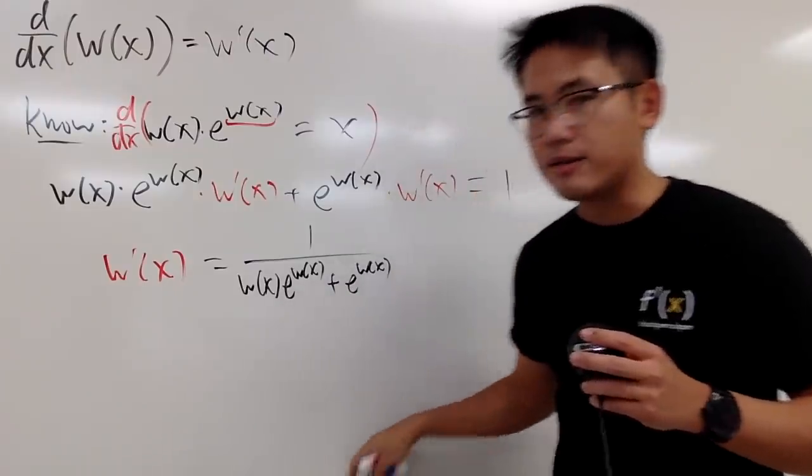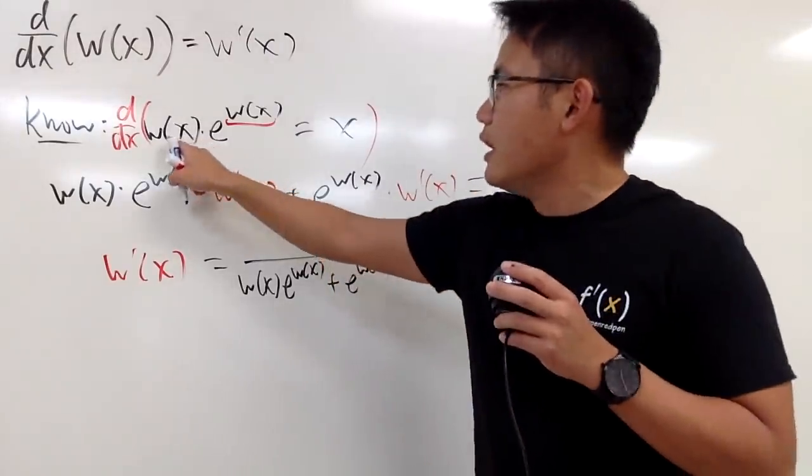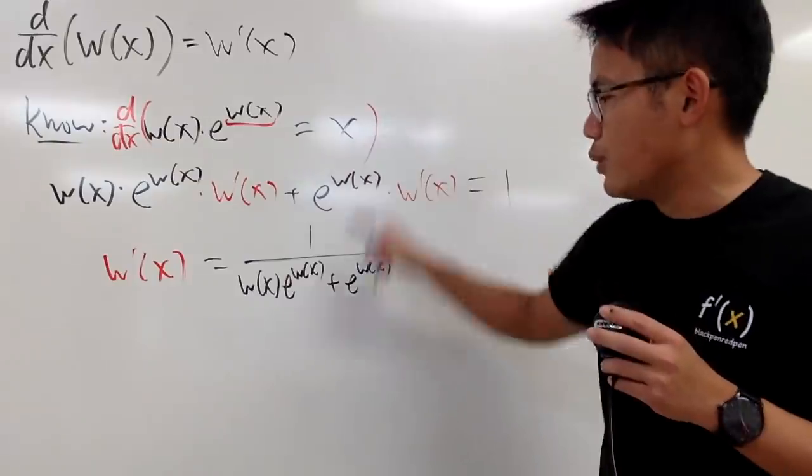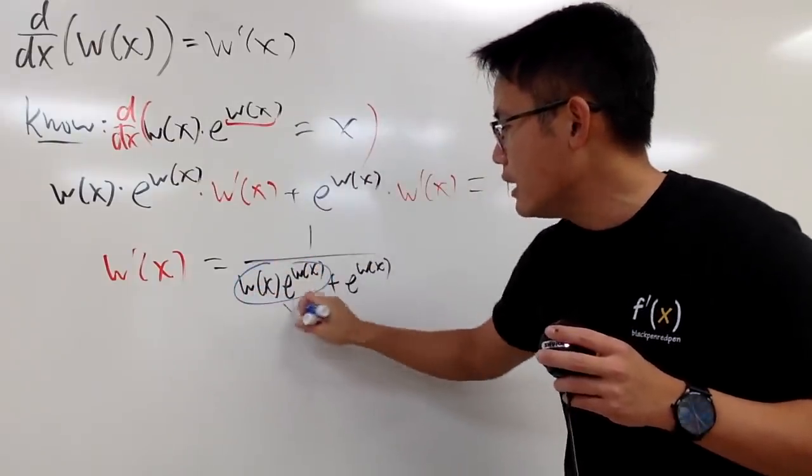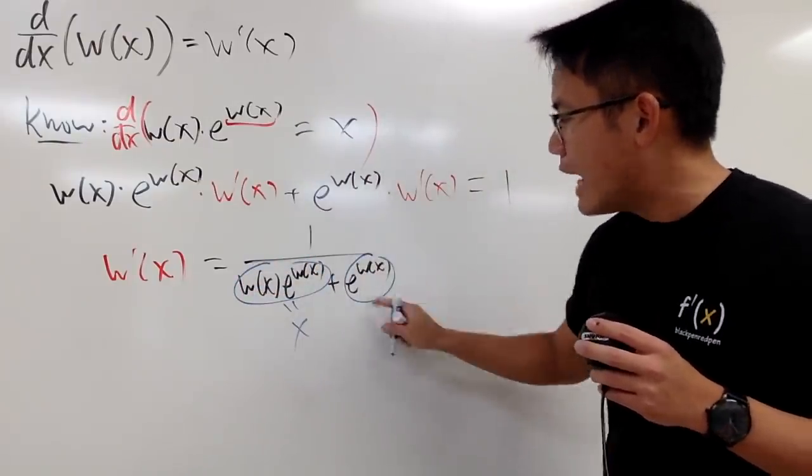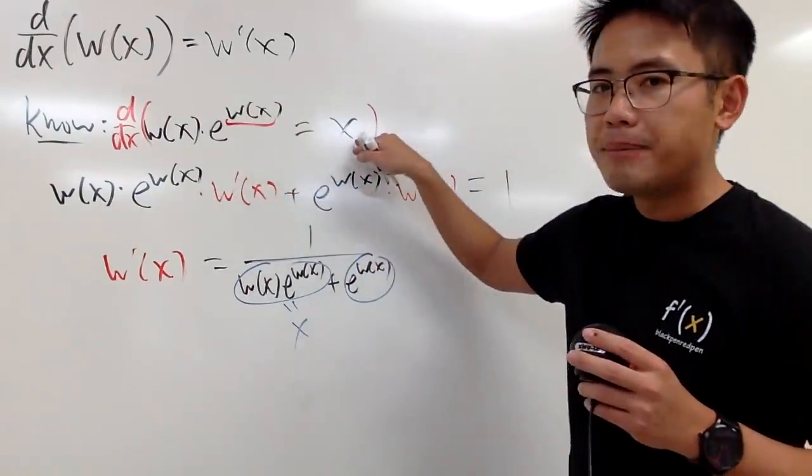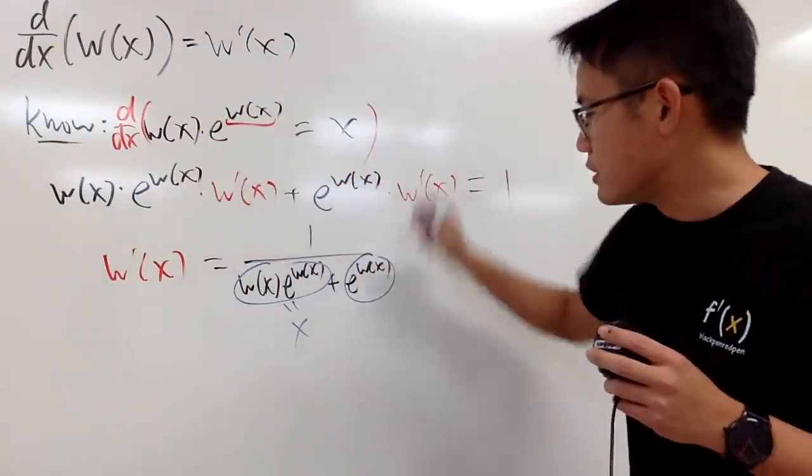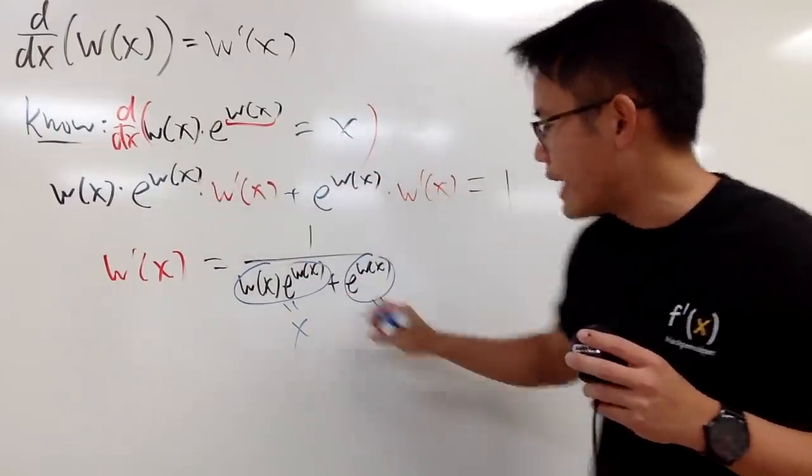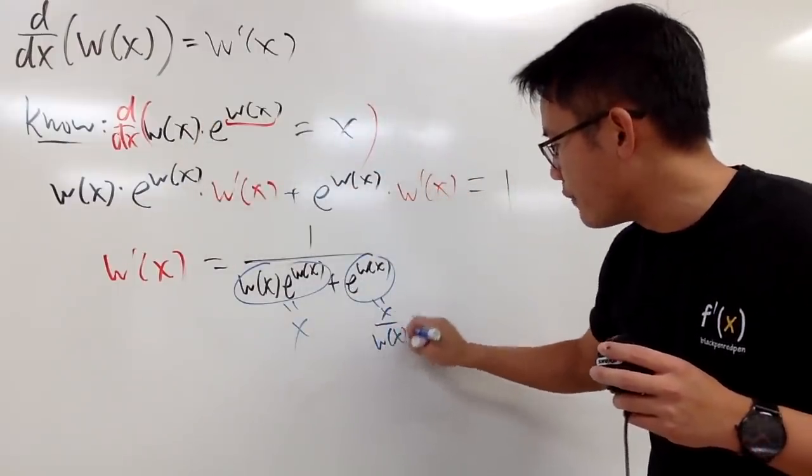So you think this is pretty much it, right? But of course, we can do better. Because you see, W times e to the W, this is equal to x. So this right here is just x. And if you only have e to the W of x right here, you can divide both sides by W of x. So this is equal to x over that, x over W of x, like that.